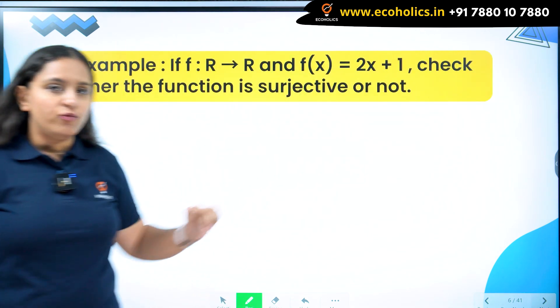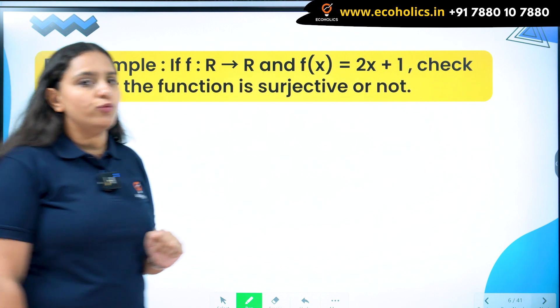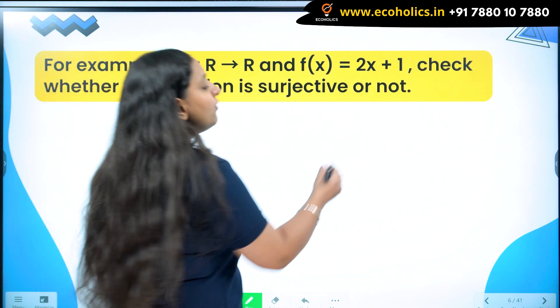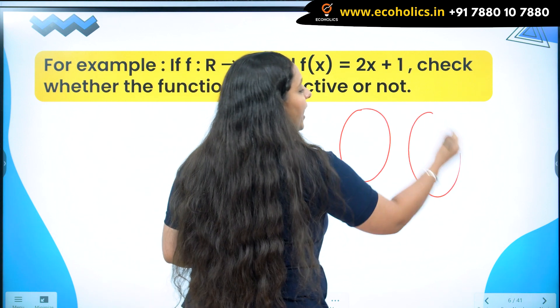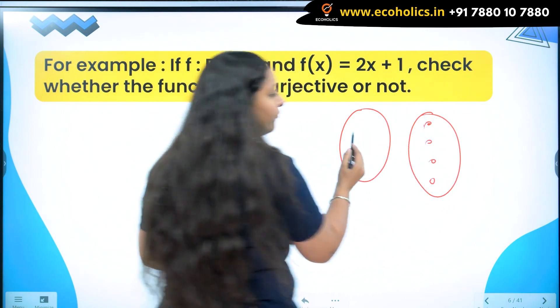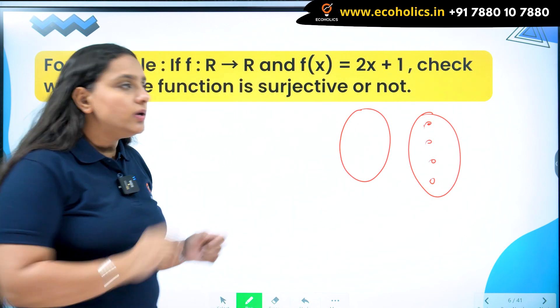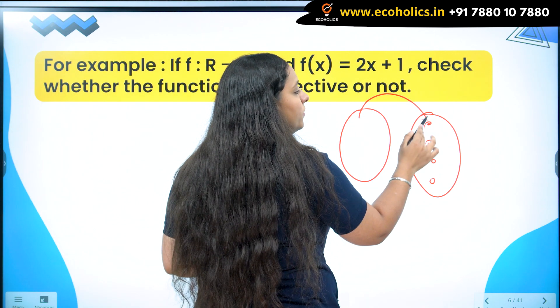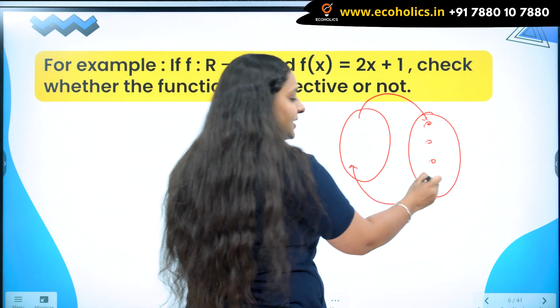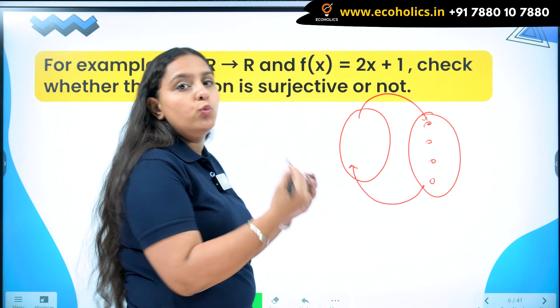Let's take help of one example to understand how to check for a surjective function. Now what we are saying is, if I keep 4 elements here, for all of them, I should have pre-images here. So instead of moving from here to here, I'm moving in this direction. This direction gives me the inverse function.